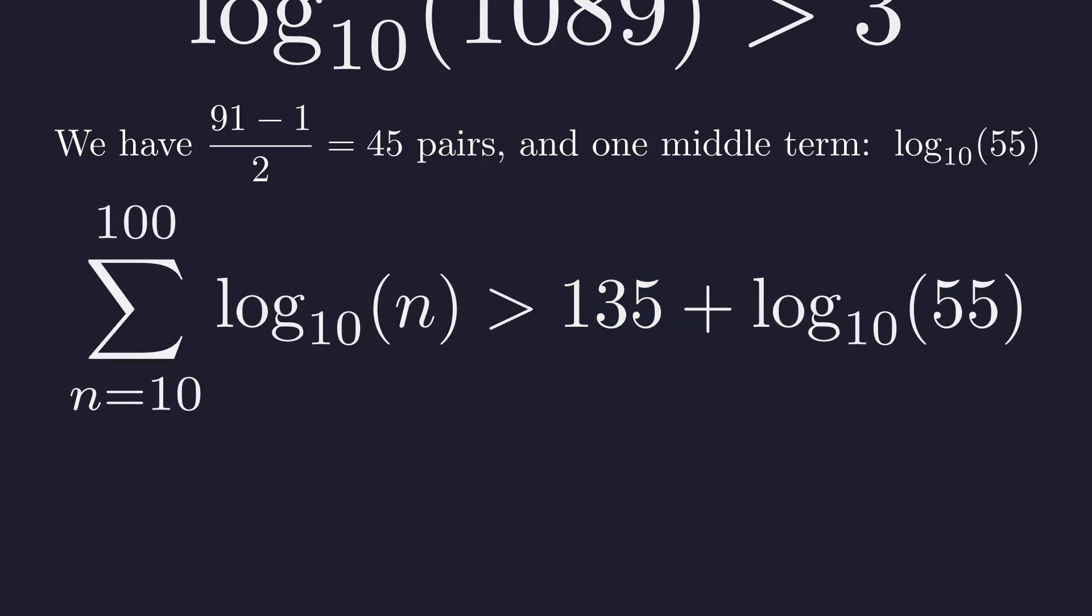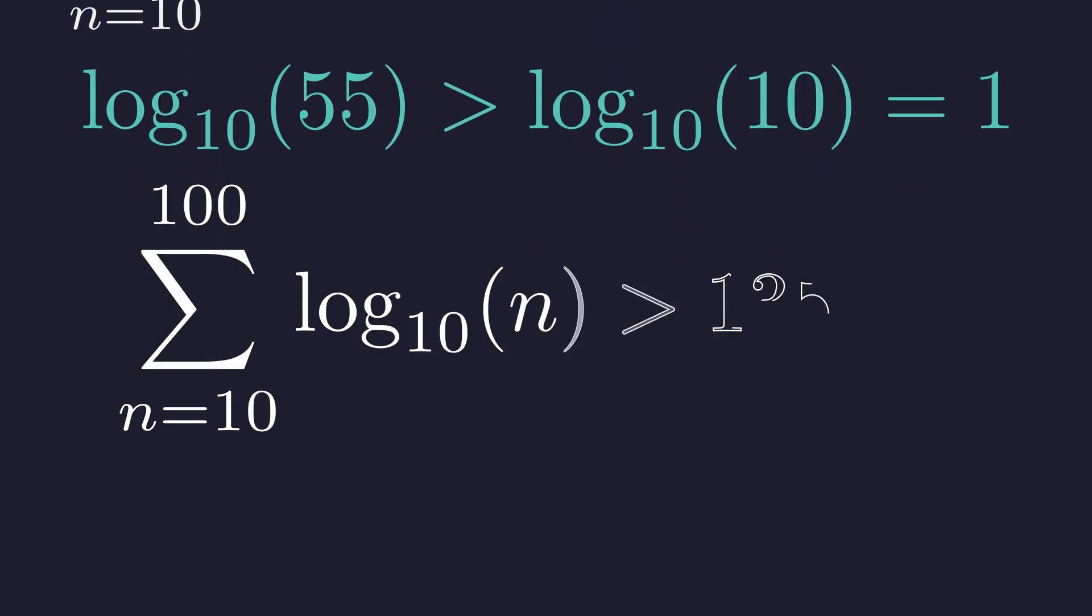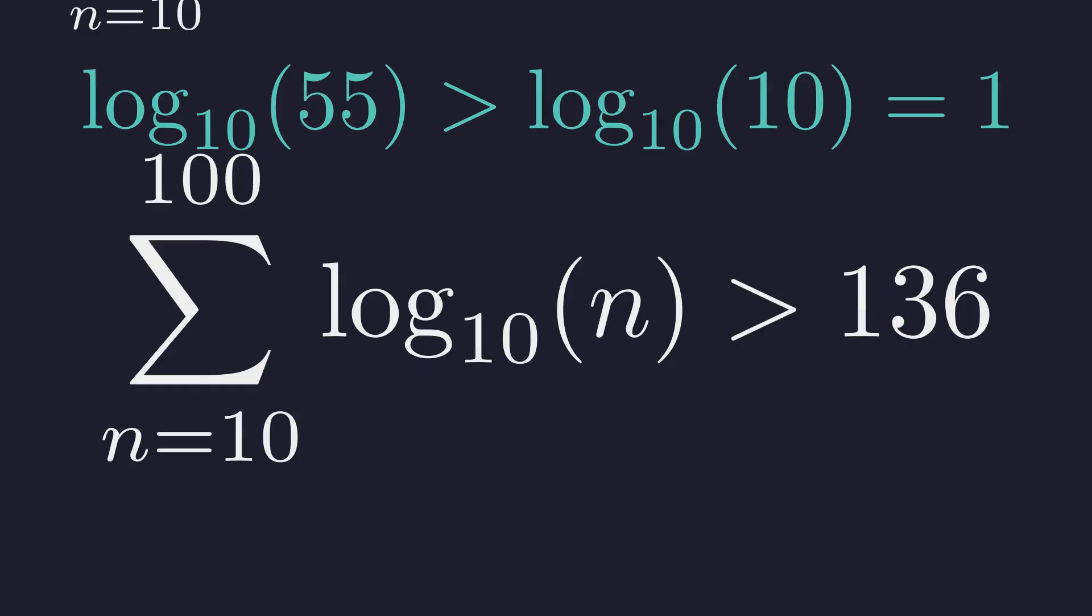Let's work that out. 45 times 3 is 135. Now, what about that log of 55? Well, 55 is bigger than 10. So its logarithm is bigger than log of 10, which is 1. We can safely say our sum is bigger than 135 plus 1. And there it is. The sum is definitely bigger than 136.